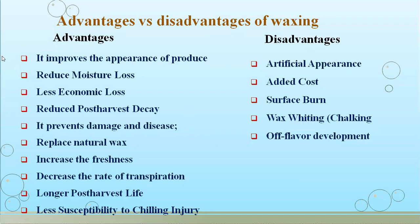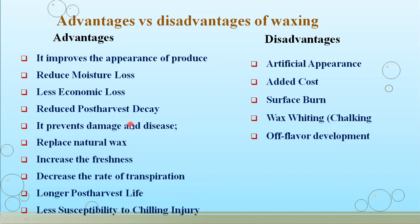We will see some advantages and disadvantages of waxing. First, the advantages: it improves the appearance of the product, reduces moisture loss, results in less economic loss, reduces post-harvest decaying, prevents damage and diseases, replaces some natural waxes, increases freshness of the commodity, decreases the rate of transpiration, provides a longer post-harvest life, and reduces susceptibility to chilling injury.